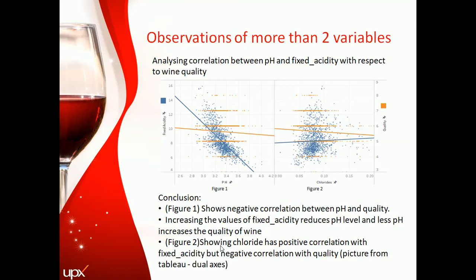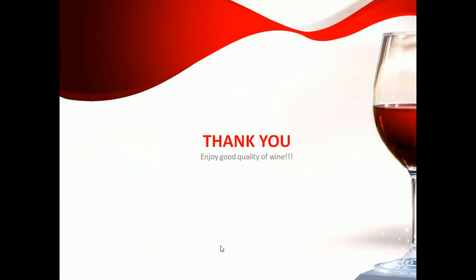These two graphs clearly show the dependency of combinational factors to improve the quality of wine. To summarize, we have proved that volatile acidity, citric acid, chlorides, density, and alcohol play major roles in classifying the quality of wine. Thank you all and enjoy good quality wine — cheers!